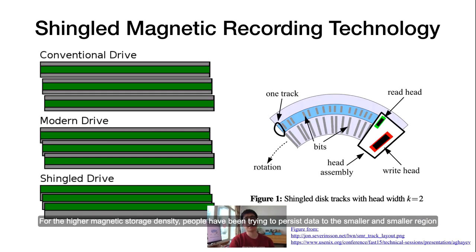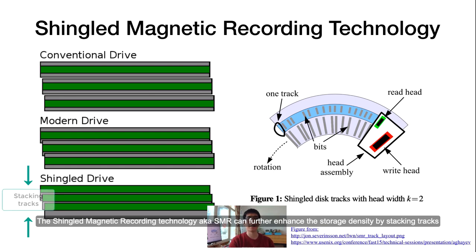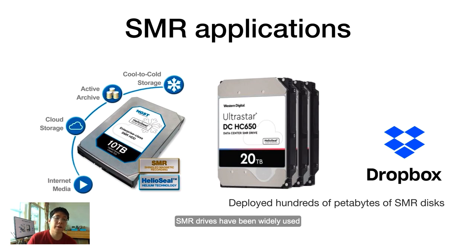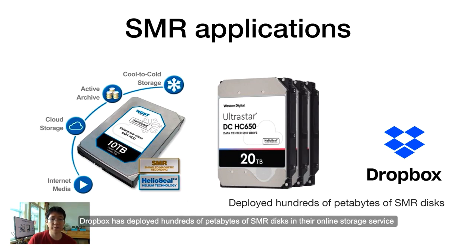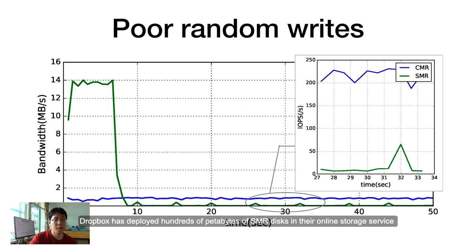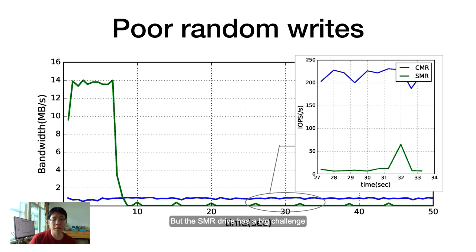For higher magnetic storage density, people have been trying to persist data to smaller and smaller regions. The shingled magnetic recording technology, aka SMR, can further enhance storage density by stacking tracks. SMR drives have been widely used. Dropbox has deployed hundreds of petabytes of SMR disks in their online storage service. But the SMR drive has a big challenge: poor performance of random writes because of the inherent write amplification.